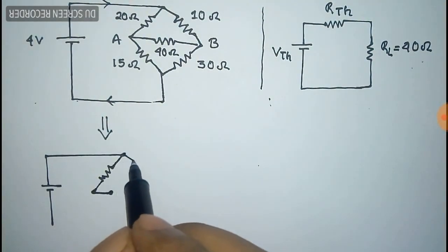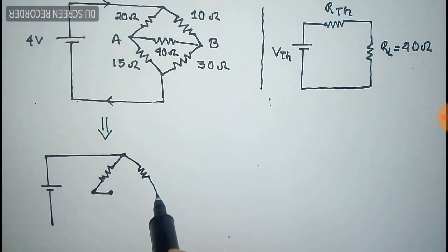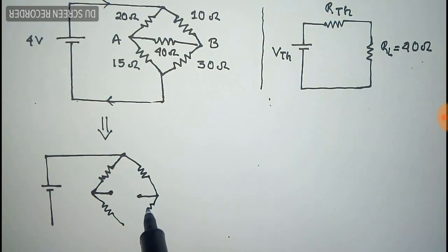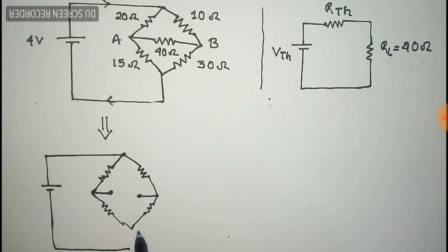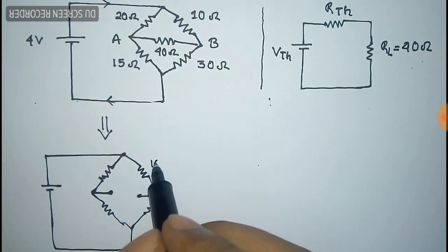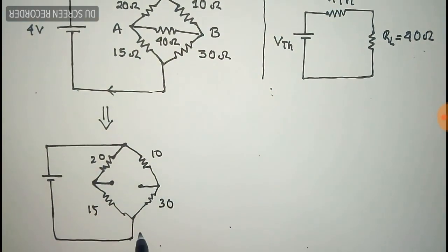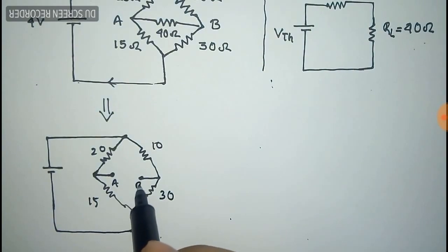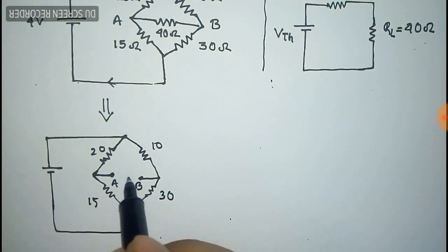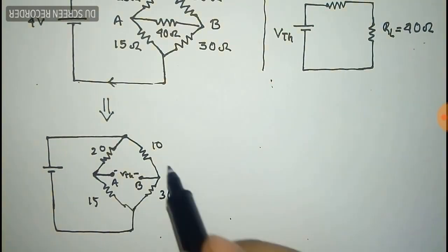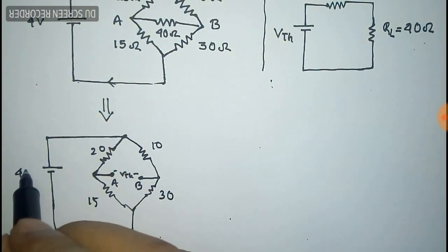We withdraw the load resistance, that is 40 ohm, to calculate V_thevenin, or the Thevenin voltage. The other resistances remain the same: 10, 20, 15, and 30 ohm. The Thevenin voltage V_thevenin exists at the open terminals, and we have to calculate this V_thevenin.